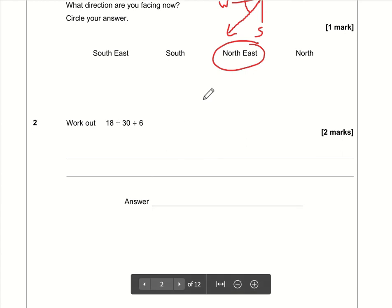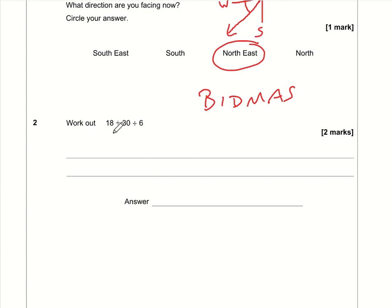Question 2 tests understanding of BIDMAS. We have addition and division: 18 + 30 ÷ 6. We do the division first: 30 divided by 6 is 5, so the question becomes 18 plus 5, which equals 23.